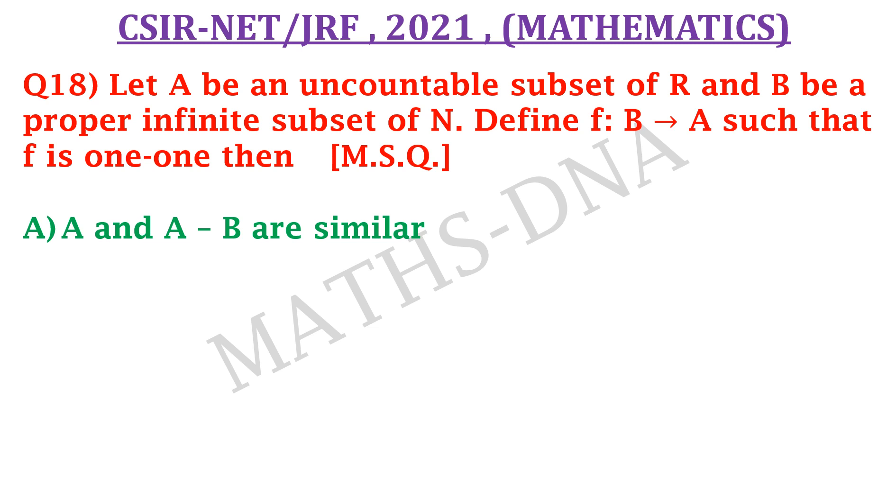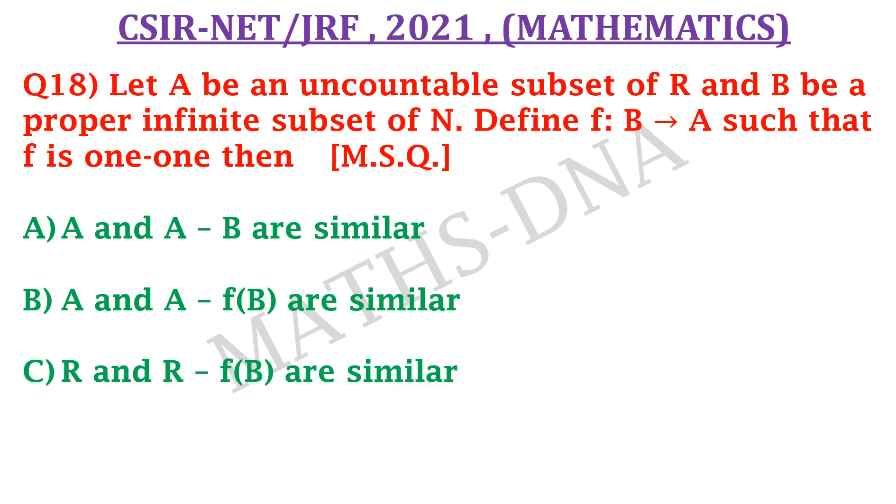Then the options are: A, A and A minus B are similar; B, A and A minus F(B) are similar; C, R and R minus F(B) are similar; and D, none of them. This question is a multiple selective question which means that more than one options can be correct.